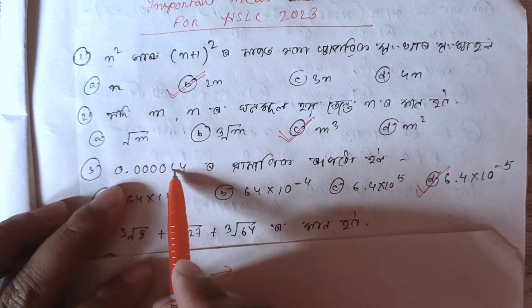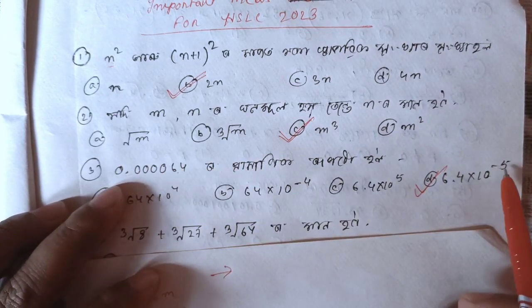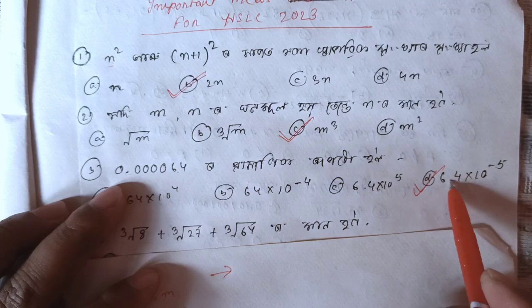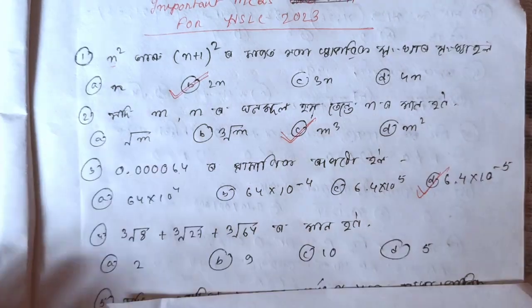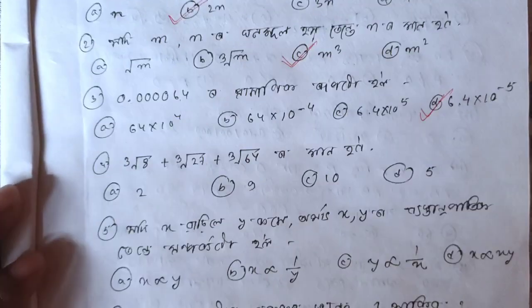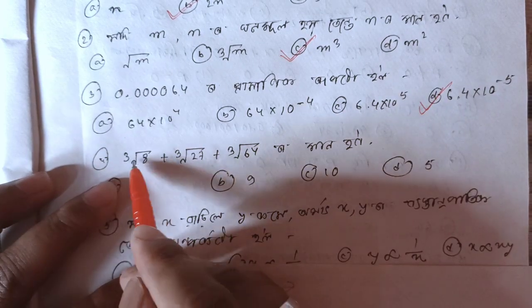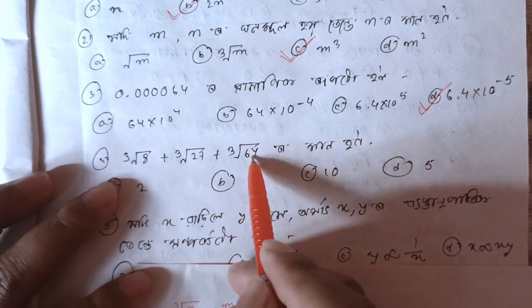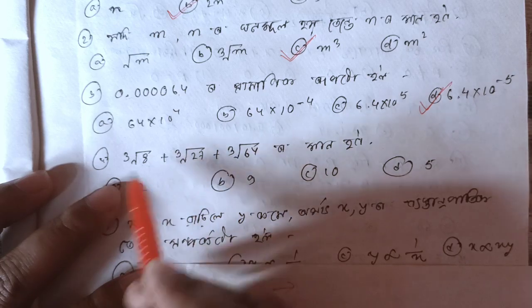If you add 2 decimal places, it goes to minus 8 to the power. The decimal moves 2 places. Next, side number 3, meaning athar ghanamul, athar ghanamul, and sokhosti ghanamul.